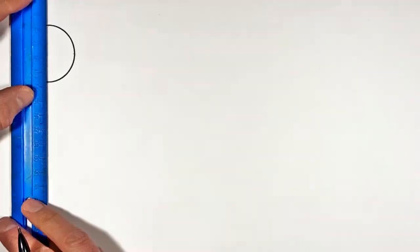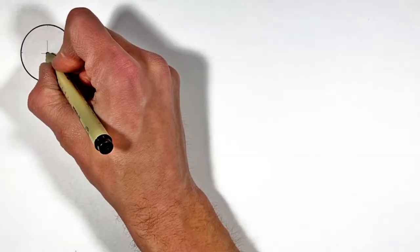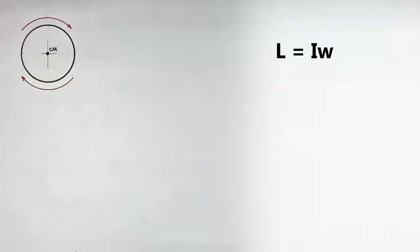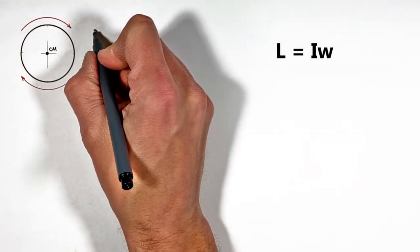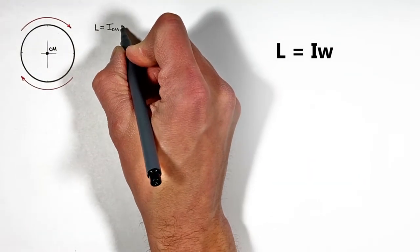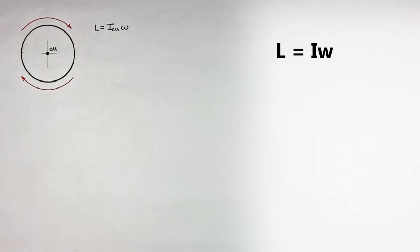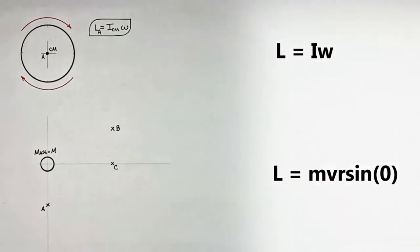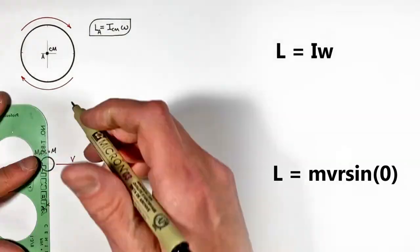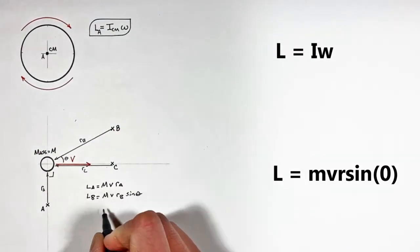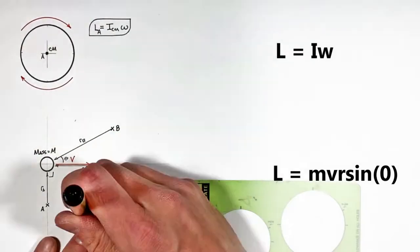We know the angular momentum of a rotating object around some axis is given by I omega, where I is the rotational moment of inertia and omega is the angular velocity of that object around that axis. And we know the angular momentum of a particle, even if it's moving in a straight line, can be calculated using the equation Rmv sine theta.